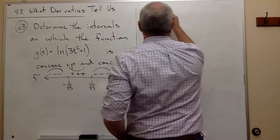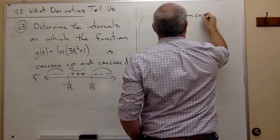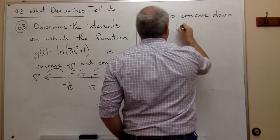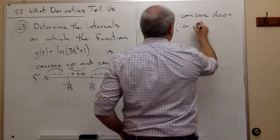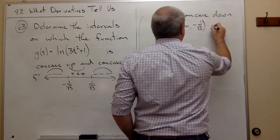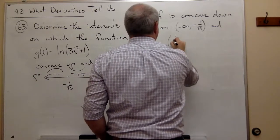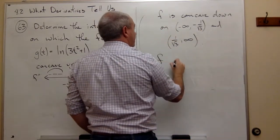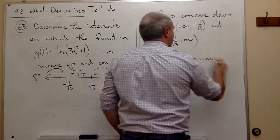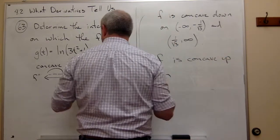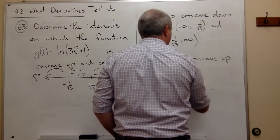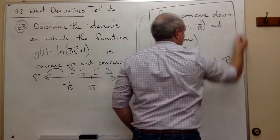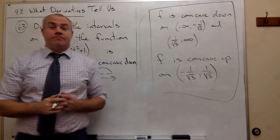And so I can say that F is concave down on, it's concave down from -∞ all the way to -1/√3, and it's concave down from 1/√3 to positive ∞. Also, F is concave up on the interval from -1/√3 to 1/√3. And that's my answer.